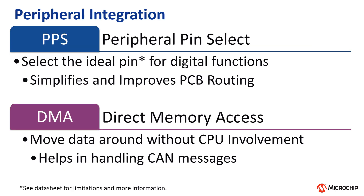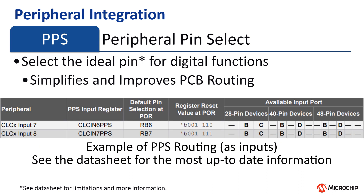The CAN FD controller on the Q84 is enhanced by the wide range of onboard peripherals that can improve the performance and efficiency of the device. For instance, the CAN controller's pins are routed through the Peripheral Pin Select, or PPS, feature on PIC devices. This allows designers to move the CAN transmit and receive pins to a more suitable pin and port assignment if desired. The device datasheet provides a list of peripheral signals and the available ports the signals can be routed to via PPS.